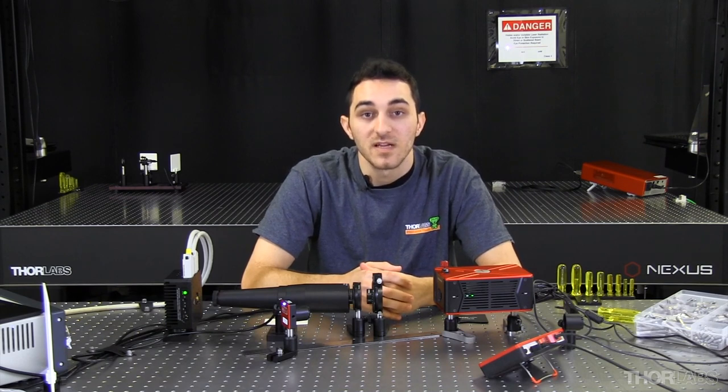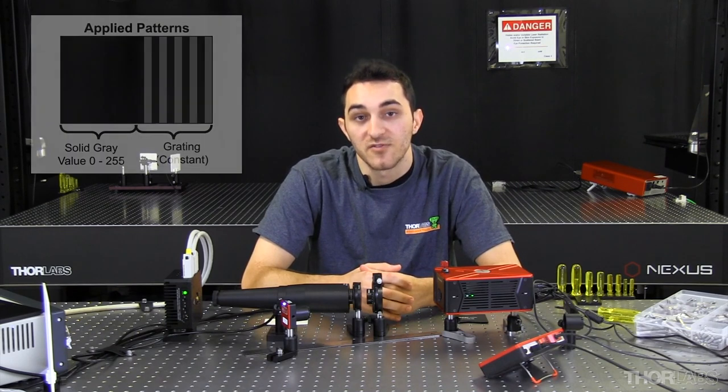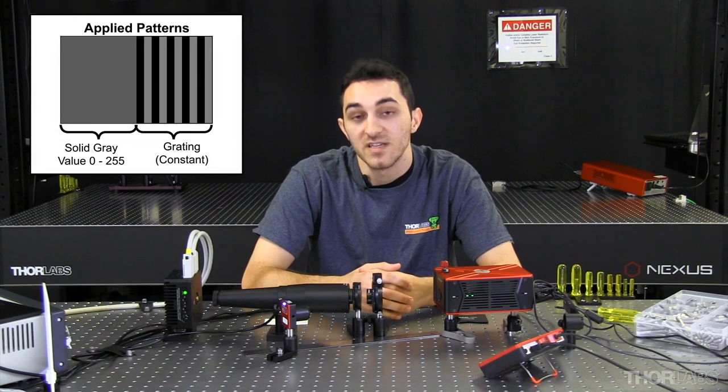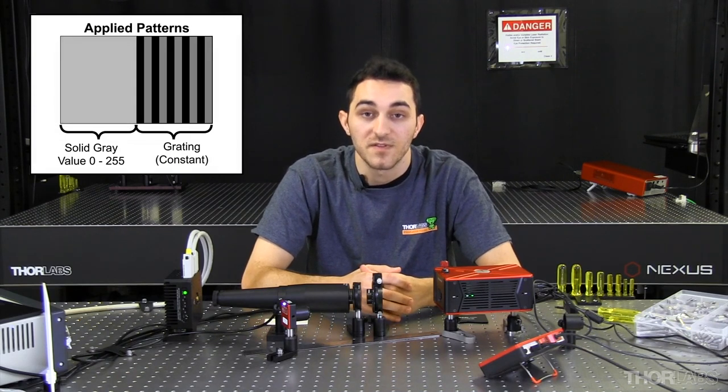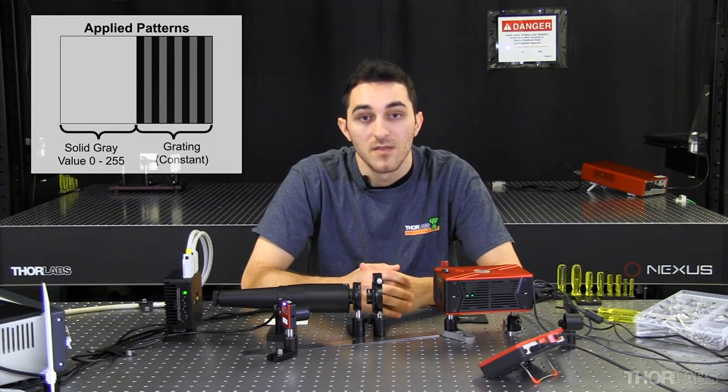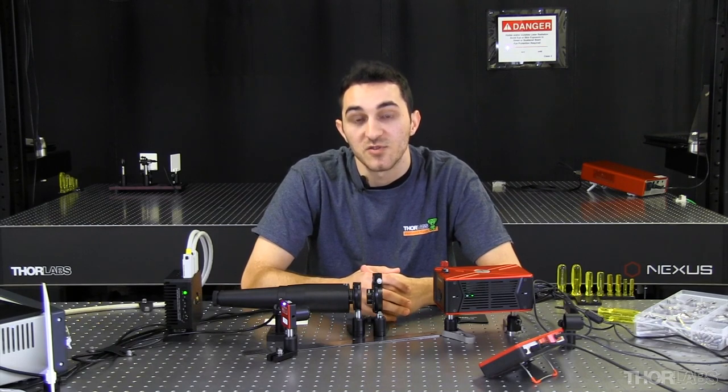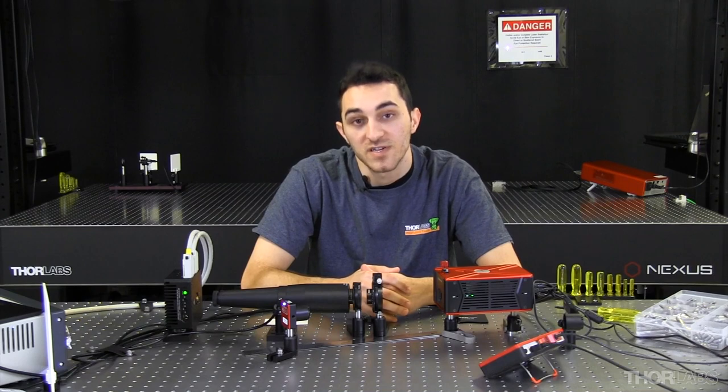Each calibration pattern has the same phase grading applied to the grading side. However, the grayscale value applied to the mirror side is incrementally increased from 0 to 255. The camera will capture an image corresponding to each calibration pattern. Once this is completed, I can analyze the images captured by the camera to determine the phase difference between each grayscale value.